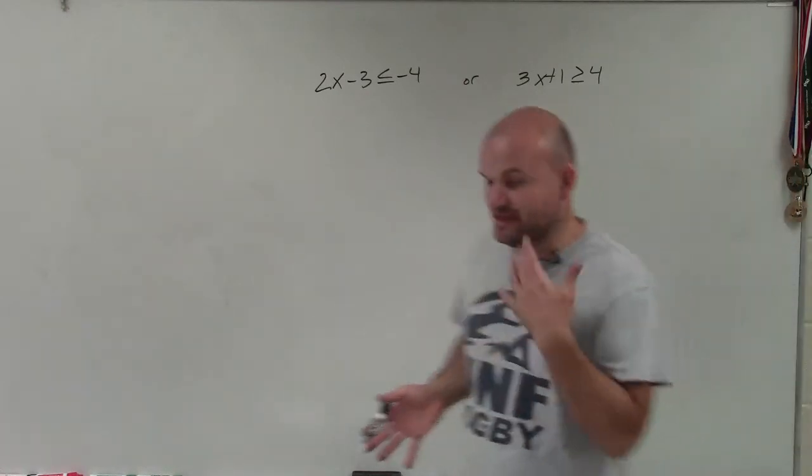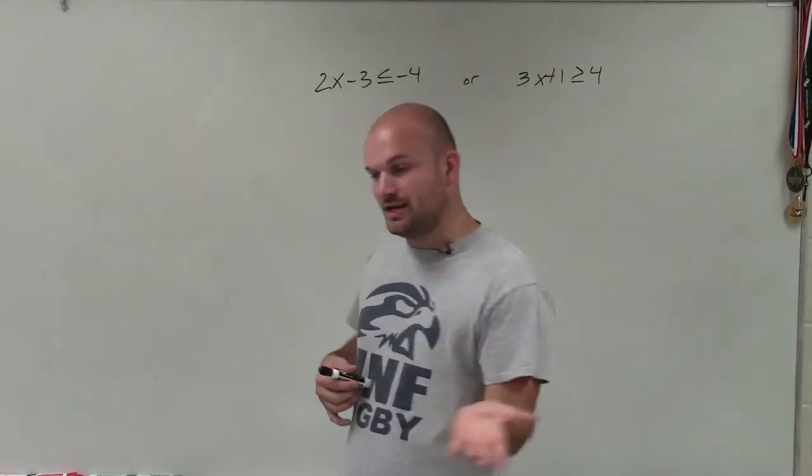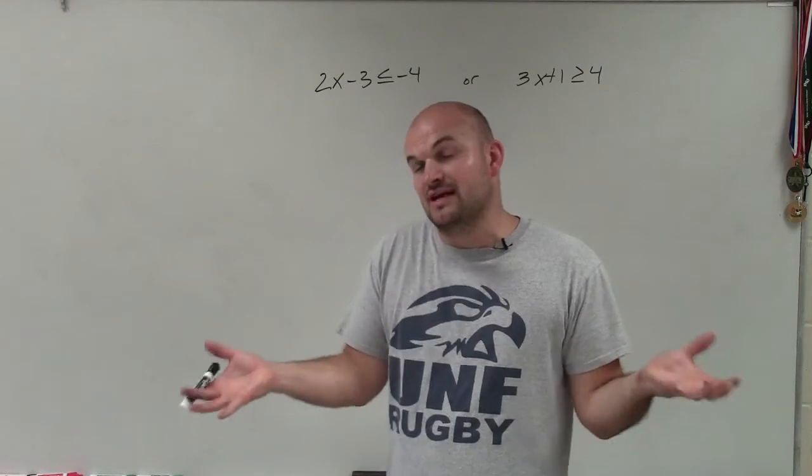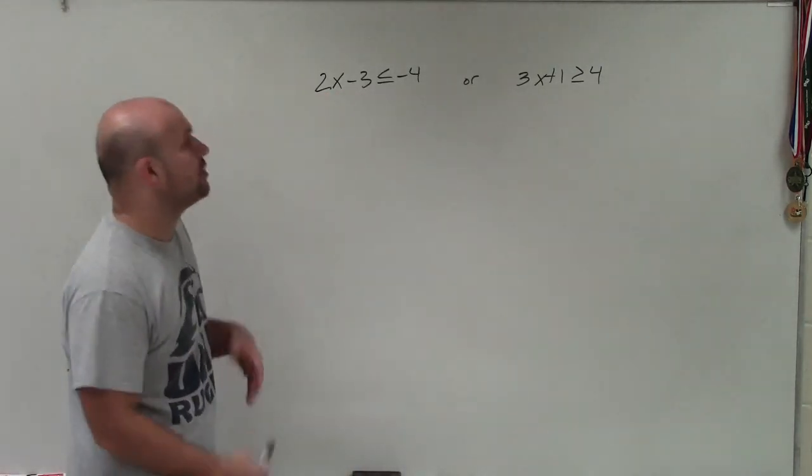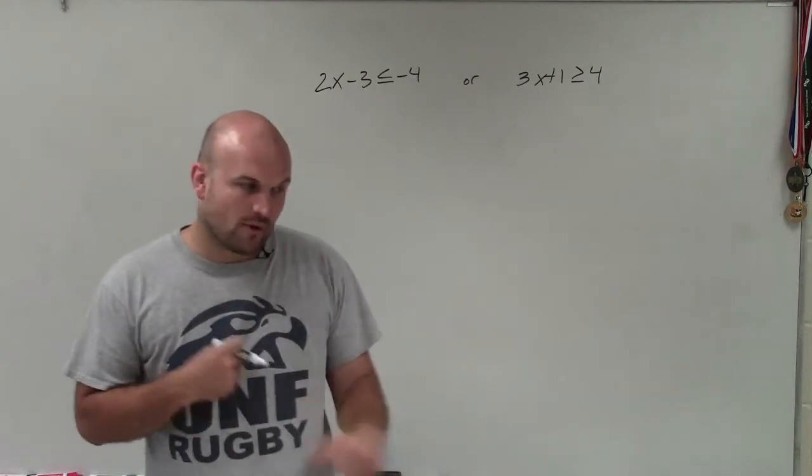Now remember, OR, it's going to be all we have to do is it's going to be one solution or the other. So we're going to have to make sure we include both of them. So I have 2x minus 3 is less than or equal to negative 4, OR 3x plus 1 is greater than or equal to 4.